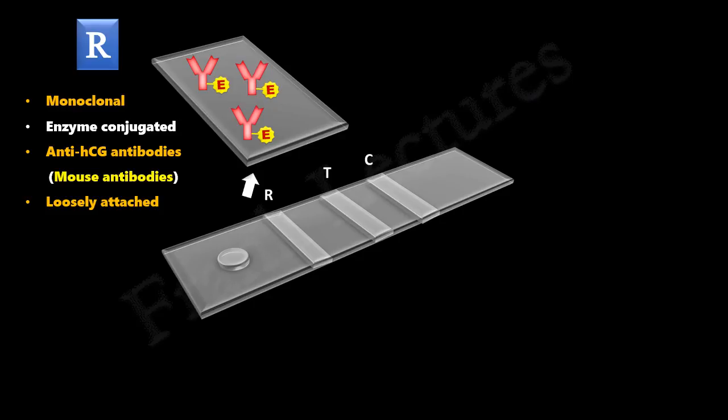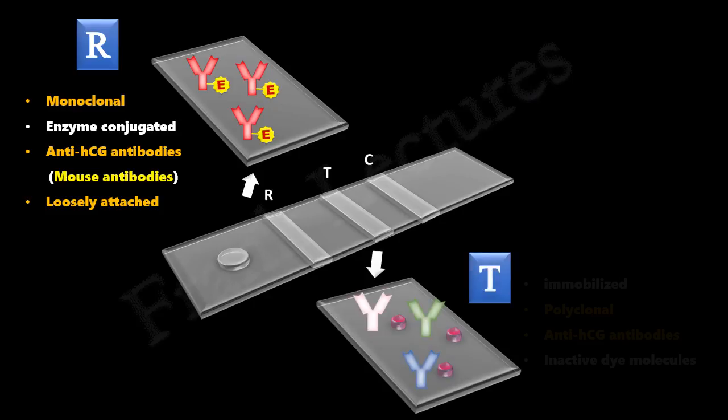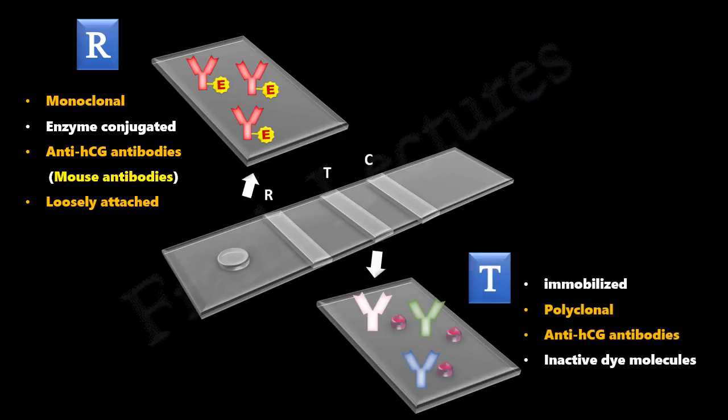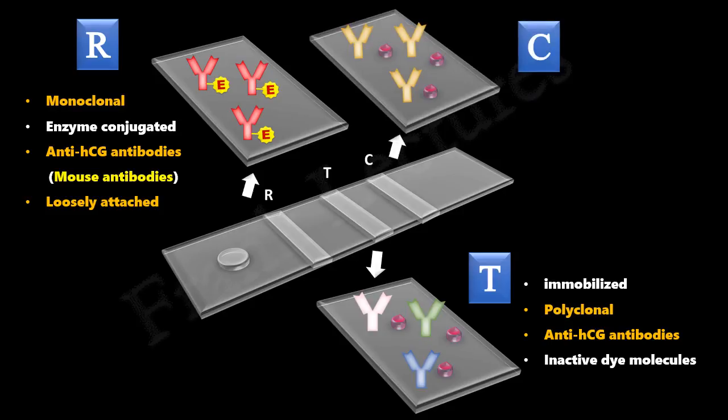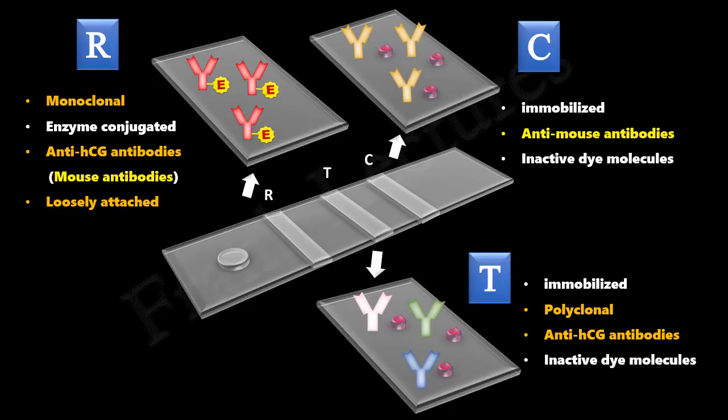The test zone is made up of immobilized polyclonal anti-HCG antibodies and inactive dye molecules. The control zone is made up of immobilized anti-mouse antibodies and inactive dye molecules. The anti-mouse antibodies are specific for the reaction zone antibodies.